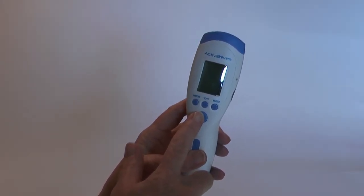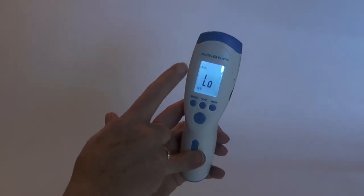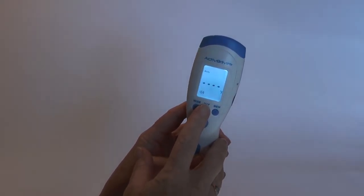Your contactless infrared thermometer uses infrared technology. You can change the measurement type from Celsius to Fahrenheit.